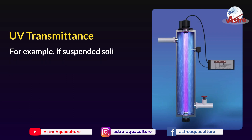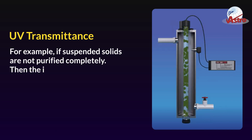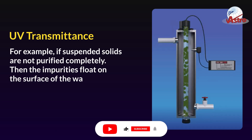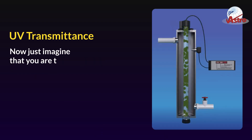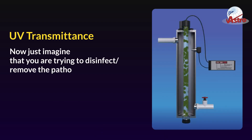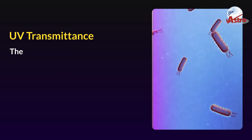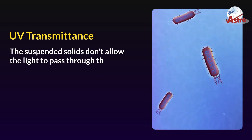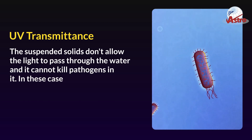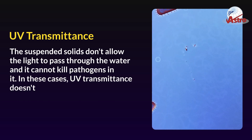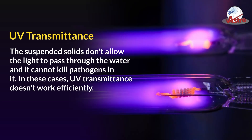UV transmittance is the measure of UV light that passes through the water to remove pathogens. For example, if suspended solids are not purified completely, the impurities float on the surface of the water. When trying to disinfect and remove pathogens using UV light, suspended solids don't allow the light to pass through, and it cannot kill pathogens. In these cases, UV transmittance doesn't work efficiently.